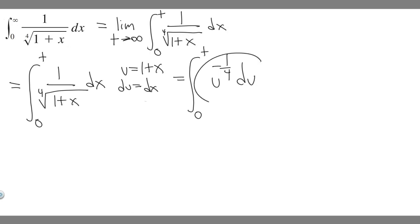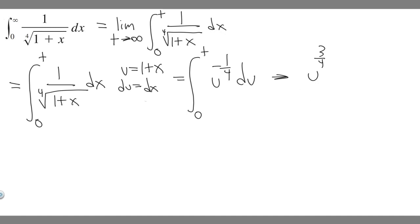Now we find the antiderivative. We add 1 to the exponent: minus 1/4 plus 1 is 3/4, and then we divide by 3/4, which is the same as multiplying by 4/3. So the antiderivative is (4/3) u to the 3/4, evaluated from 0 to t.